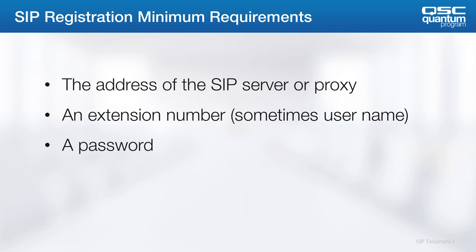Before you get started on a SIP registration, you'll need the proxy address or a fully qualified domain name of the server, the line ID — sometimes called the extension or directory number — and the password. Some devices like Cisco Call Manager require a few other things. You might need the username or digest credentials, and in some cases the username or authentication ID may be different than the extension.